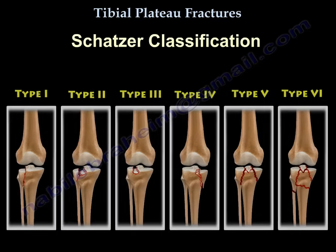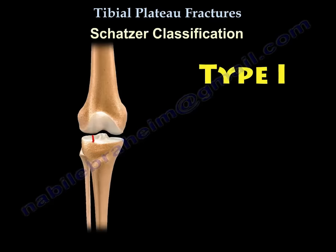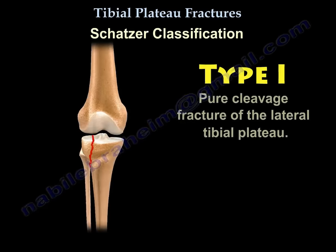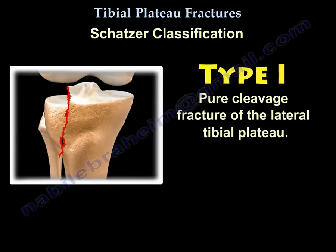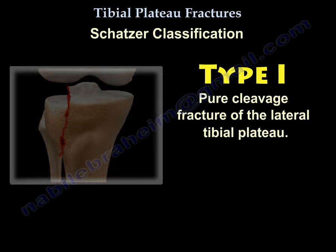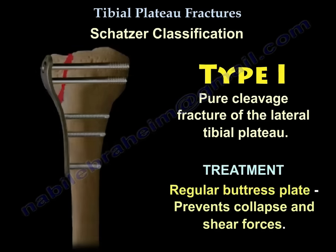You should know about Schatzker classification. Type 1 is a pure cleavage fracture of the lateral tibial plateau. The treatment is a lateral buttress plate, which prevents collapse and shear forces.